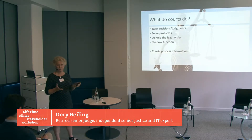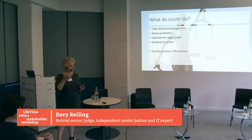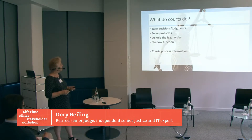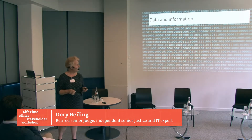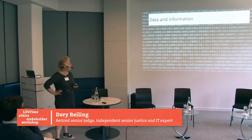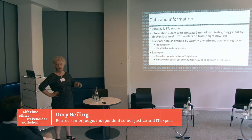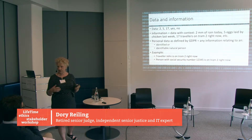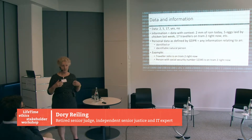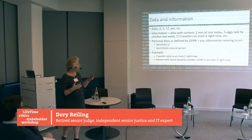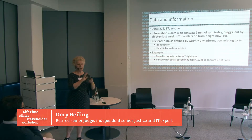How do courts do that? They process information. This looks like a very simple thing to say, but it's not in the mental makeup of most of my colleagues. Before we look at how that works, a little bit about what we mean when we say data and information. Data means you have a number — 2, 5, or 17, or yes or no — but you have no idea what that means. That's just data. They become information if you give them context. For instance: 2 millimeters of rain, 5 eggs, 17 travelers on the tram — that's how it becomes information.